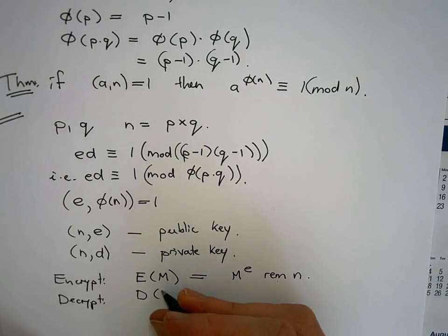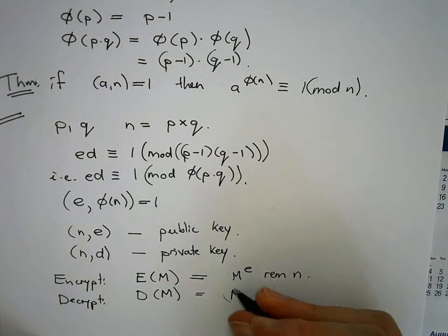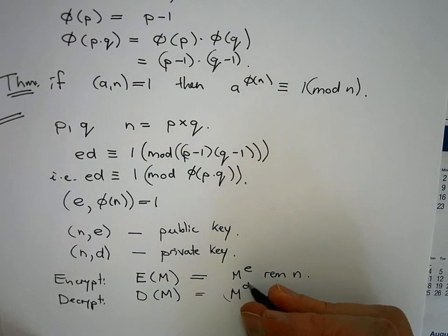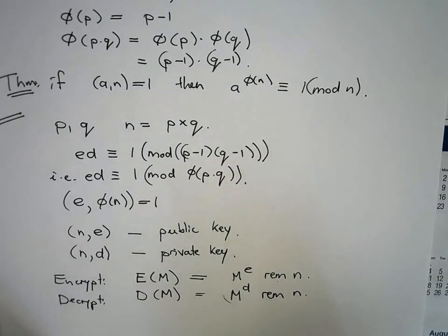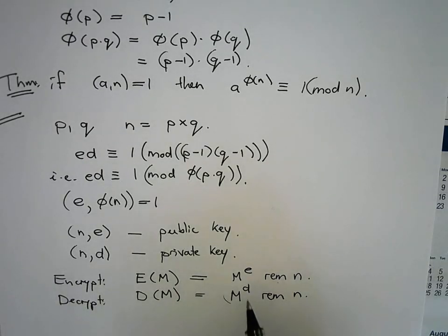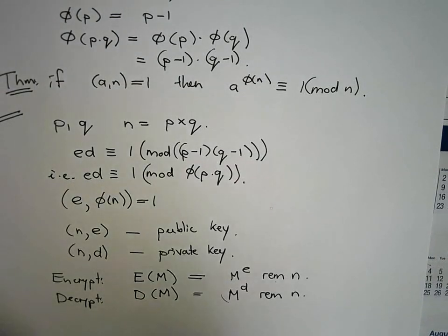Similarly, decrypt, which we denote in this way, you take the message or the encrypted message, put it to the power D and you take the remainder of the division by N. Now of course, we want encrypt and decrypt to be inverses of each other. So we need to make sure that this is the case.